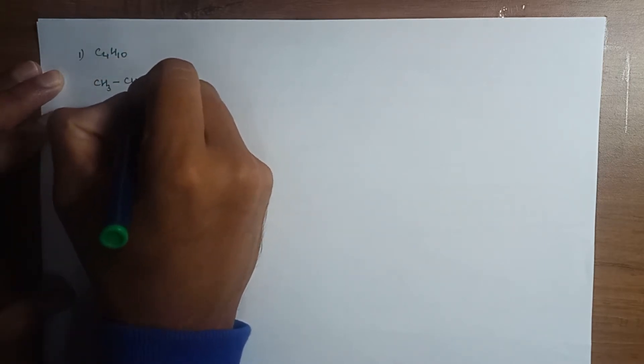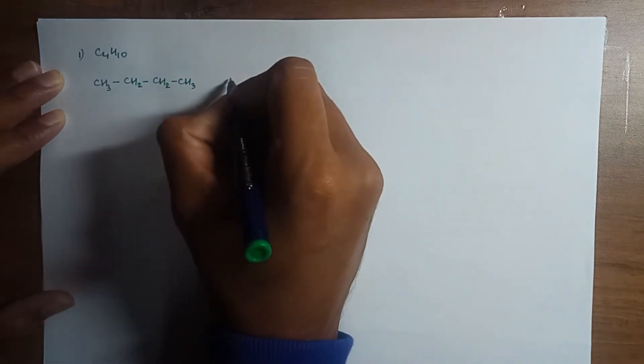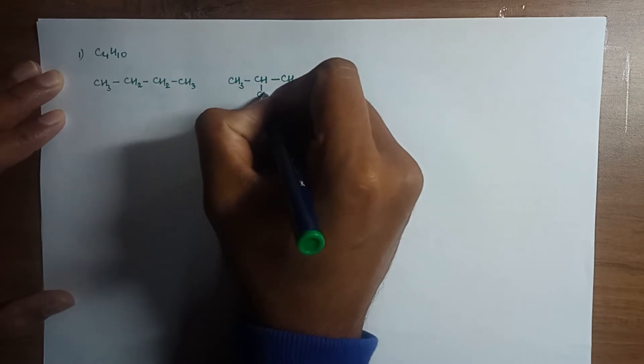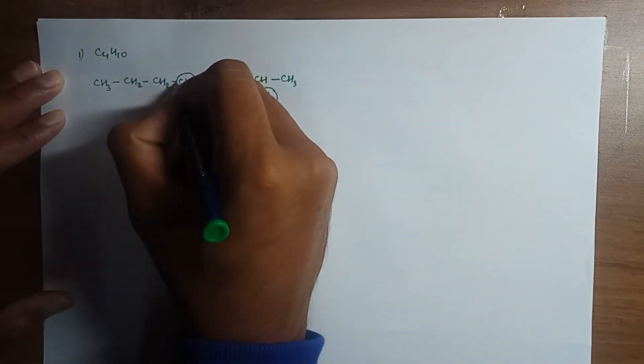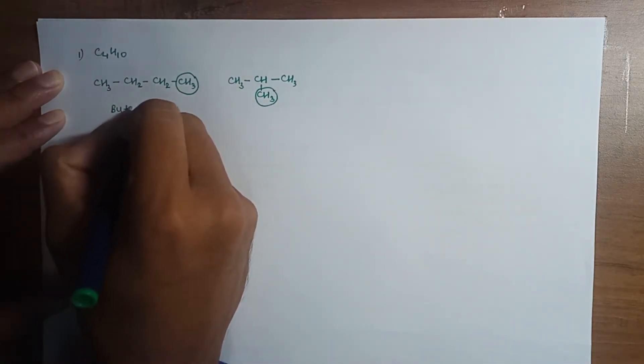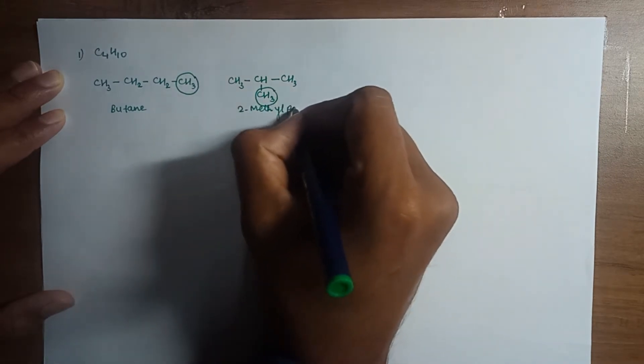Now let us understand the term structural isomerism by taking few examples. Our first is C4H10. It has two structures: CH3-CH2-CH2-CH3 and one more structure which is CH3-CH(CH3)-CH3. Here you can see that the connectivity of CH3 group in both the compounds is different. As connectivity is different their names are different. This is my butane and this is my 2-methyl propane.